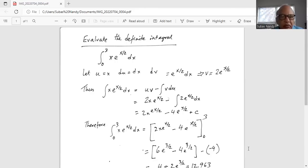So the integration of x times e to the x by 2, dx, is uv minus vdu. So our u is x and v is 2e to the x by 2 minus vdu.